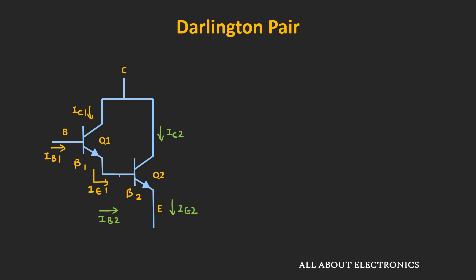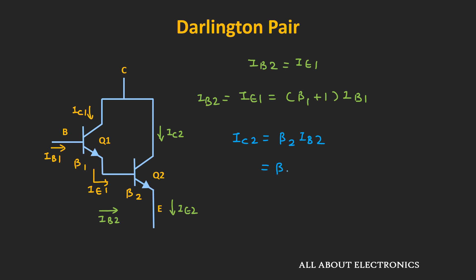All these currents are DC currents. As you can see, clearly Ib2 is equal to Ie1. We know that the emitter current can be given as (β+1) times Ib, so here this current Ie1 will be equal to (β1+1) times Ib1, and that is equal to Ib2. Now the collector current of the second transistor can be given as β2 times Ib2, which is equal to β2 times (β1+1) times Ib1.